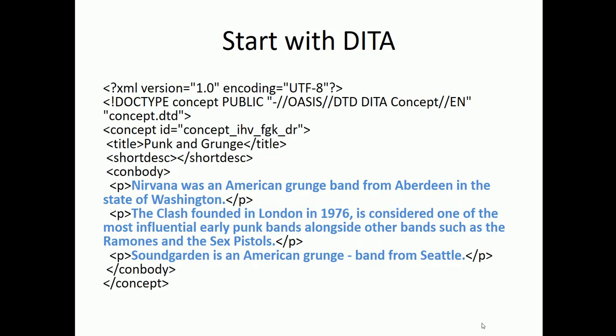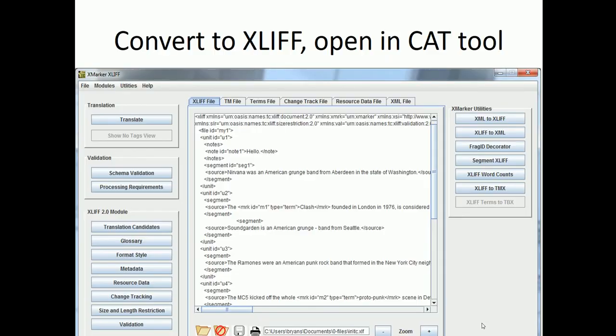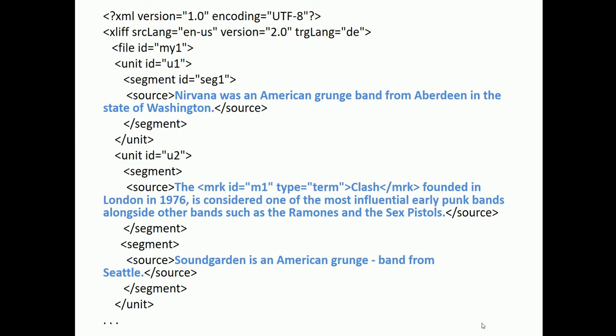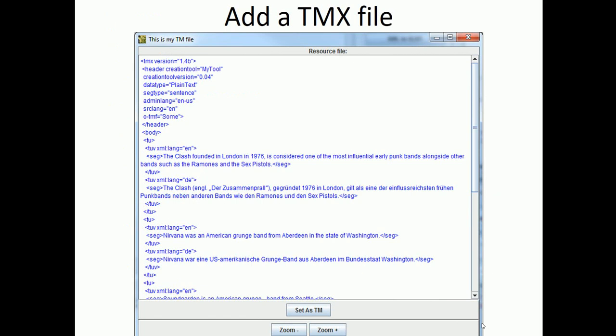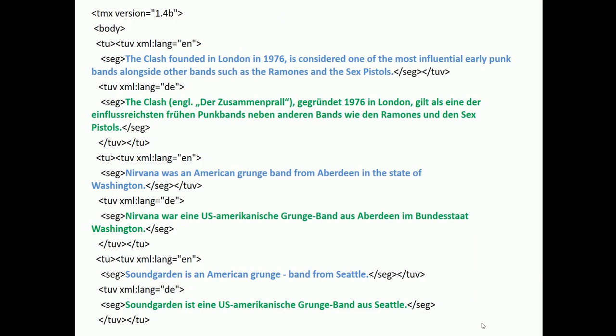Here's how that works. We start off with a garden variety DITA file with a couple of paragraphs — one about Nirvana, one about the Clash, one about Soundgarden. We convert this to XLIF and open it in our computer-aided translation tool — this is an actual CAT tool I wrote in Java, and it completely works. We see that XLIF has created source segments. We add a TMX, which contains previously approved translations stored in the TMX file.